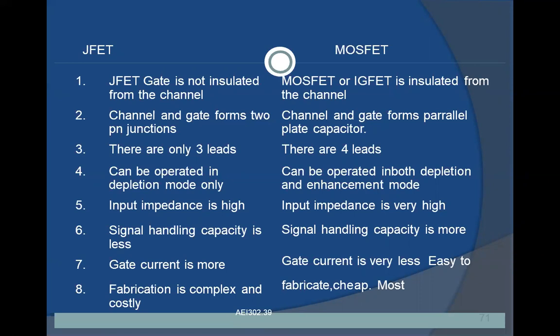In JFET, the gate is not insulated from the channel, but in MOSFET it is insulated. In JFET, the channel and gate form two PN junctions, whereas in MOSFET they form a parallel plate capacitor. JFET has only three leads while MOSFET has four leads. JFET can be operated only in depletion mode, but MOSFET can be operated in both depletion and enhancement modes. Input impedance is high in JFET but very high in MOSFET. Signal handling capacity is less in JFET but more in MOSFET. Gate current is more in JFET but very less in MOSFET. Fabrication is complex and costly in JFET but easy and cheap in MOSFET.